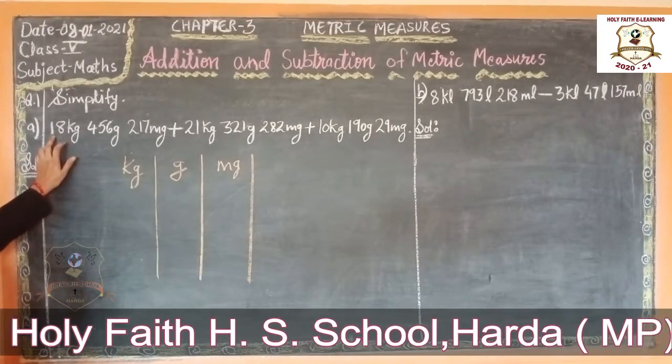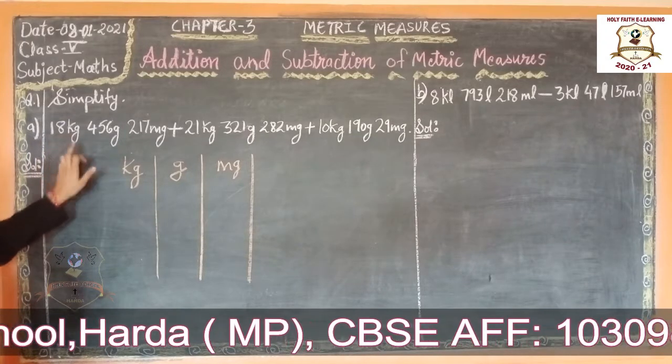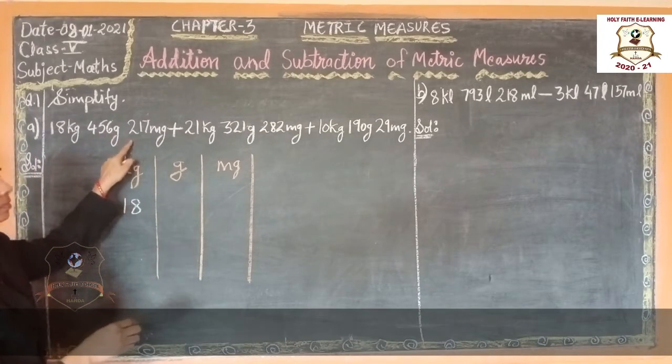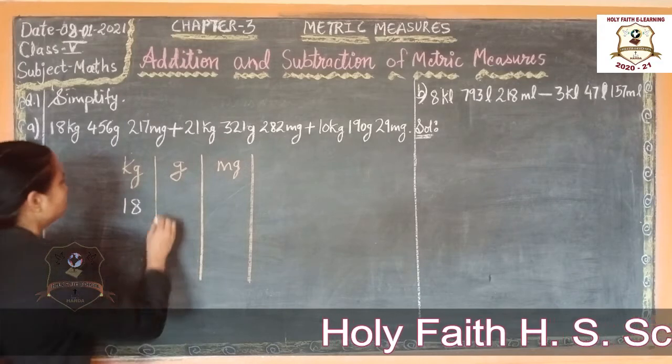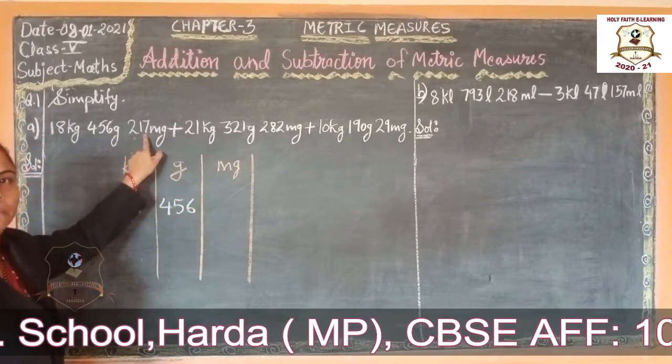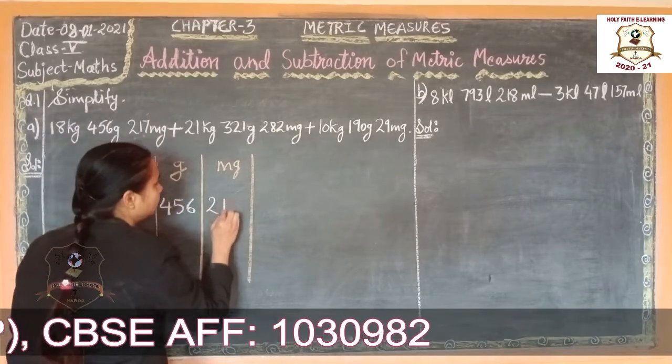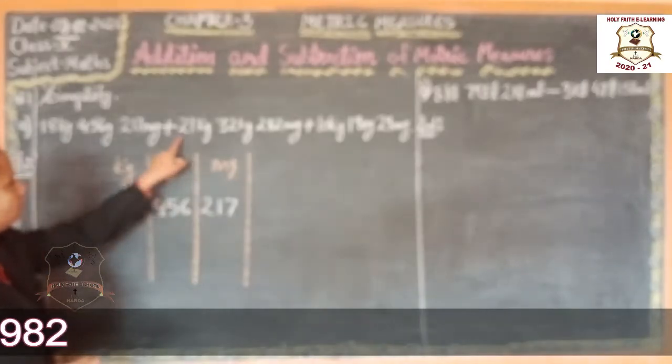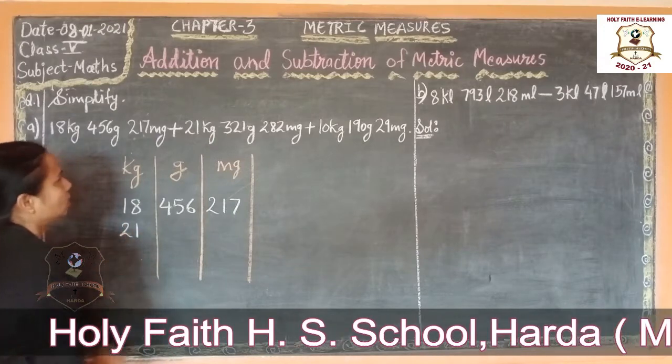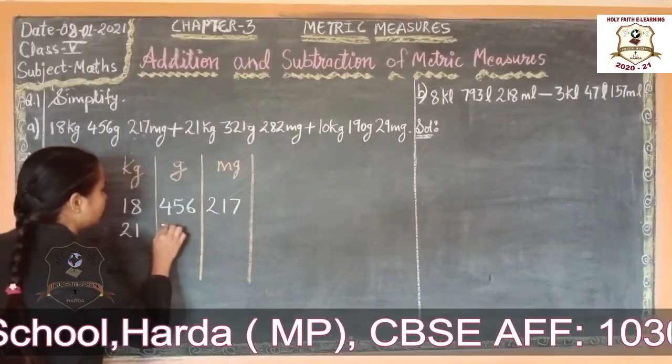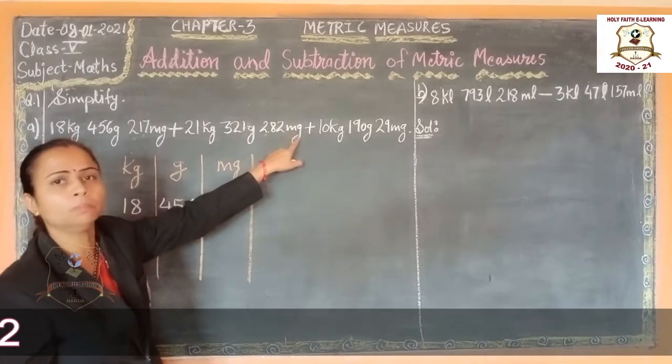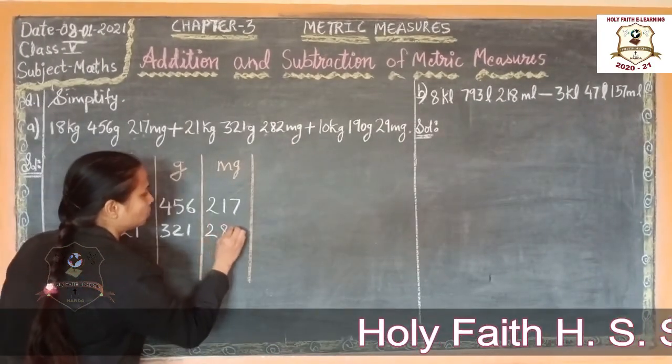Now arrange: 80 kg by 18 kg column, 456 gm, 456 gm column, 270 mg. So write 270 in mg column. Now add maximum, 21 kg. Write 21 in kg column, 321 gm. Write 321 gm. Next 282 mg. Write 282 mg.